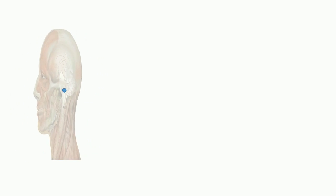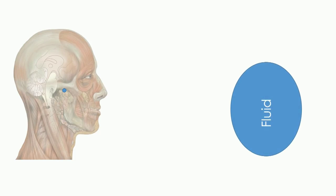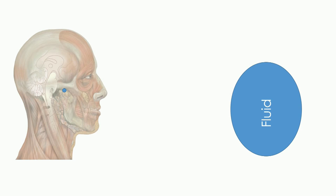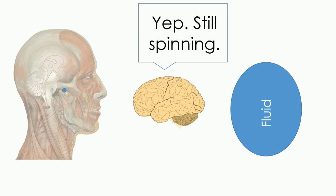The dizziness comes into play when you stop spinning. Inertia keeps the fluid spinning in your ear, so your brain is still being told it is spinning, even though it's not, and that's why we get dizzy.